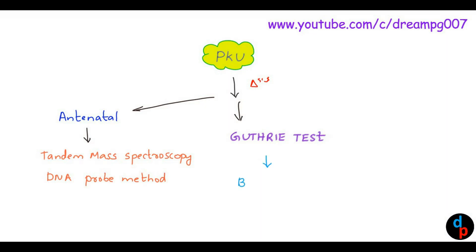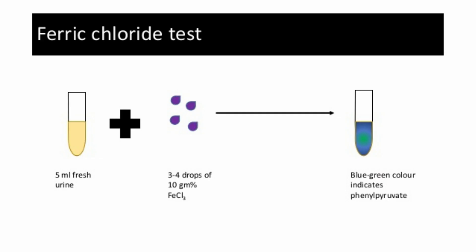The common standardized strain of soil bacterium used in the Guthrie test is Bacillus subtilis. Phenylketonuria can also be diagnosed by testing the urine with the ferric chloride test. If phenylalanine metabolites are present in the urine, the urine will give an emerald green or blue-green color with ferric chloride.